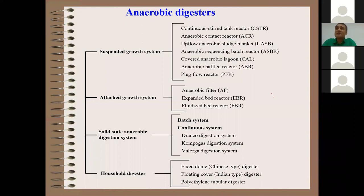There are different classifications of bioreactor systems. These include suspended growth systems, attached growth systems for low-solid biomass, and solid-state anaerobic digestion systems. Commercially developed solid-state systems include DRANCO (especially for organic fraction of municipal solid waste and food waste), Kompogas, and Belarix. For small-scale household digesters in developing countries there are fixed dome (Chinese type), floating cover (Indian type), and polyethylene tubular digesters.